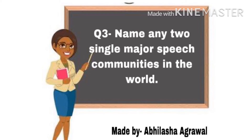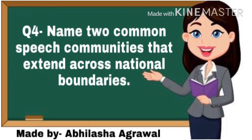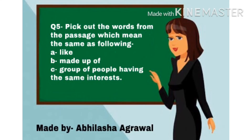Question 4: Name two common speech communities that extend across national boundaries — ऐसी दो common speech communities के नाम बताईए जो national boundaries, देशों की सीमाओं से बाहर फैलती हों। Question 5: Pick out the words from the passage which mean the same as the following — A: Like. B: Made up of. C: Group of people having the same interest.